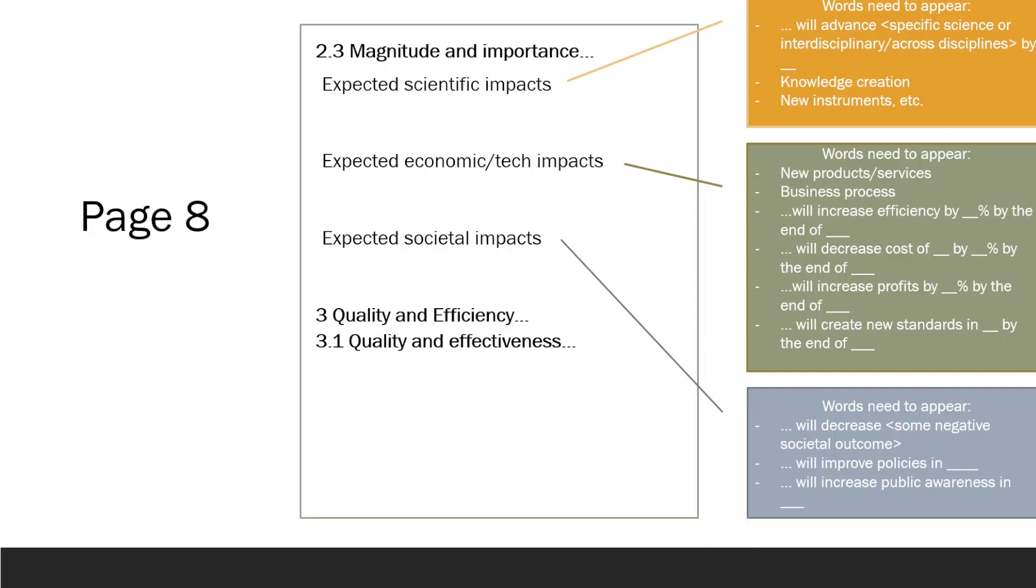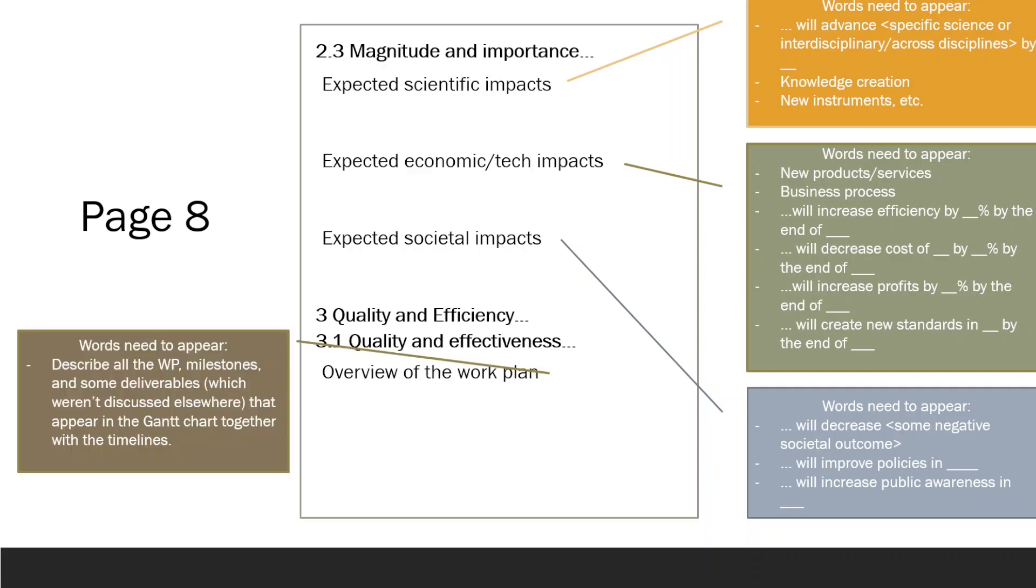In Part 3.1, Quality and Effectiveness of the Work Plan, Assessment of Risks and Appropriateness of the Effort Assigned to Work Packages, start by providing an overview of the Work Plan. This should include a description of the Work Packages, Milestones, and Deliverables, particularly those that have not been discussed elsewhere. Structure your narration based on the Gantt Chart from the next page.